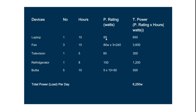For our laptop rated 65 watts, we multiply 65 watts by the 10 hours we will run it on our inverter or solar system, which gives us 650 watts. We've got three ceiling fans each rated 80 watts, which multiplied by three gives 240 watts. Multiplying 240 watts by 15 hours gives us 3,600 watts or 3.6 kilowatts.